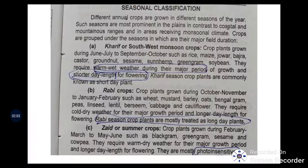The second kind is Rabi crops, grown during October-November to January-February, harvested in January and February. Such crops include wheat, mustard, barley, oats, mangled gram, peas, linseed, lentil, burseem, cabbage, and cauliflower. They require cold dry weather for their major growth period and longer day length for flowering. These are mostly treated as long day plants — Rabi season crops require more day period for flowering compared to Kharif crops.